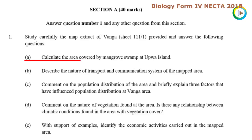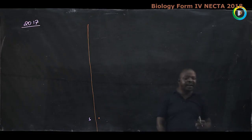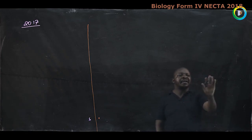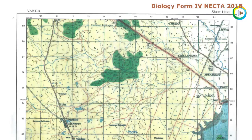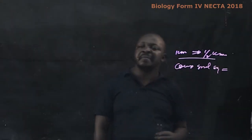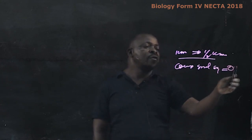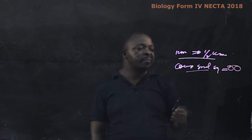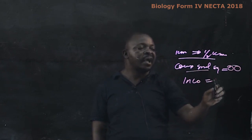We are to start with question A: calculate the area covered by mangrove swamp — the area that has been well identified as occupied by mangrove swamp. We have identified the scale as 1 to 50,000, meaning on the extract map a unit length of 1 centimeter measures half a kilometer. The area occupied by mangrove swamp on the map has no complete green squares, but incomplete green squares are about twenty.